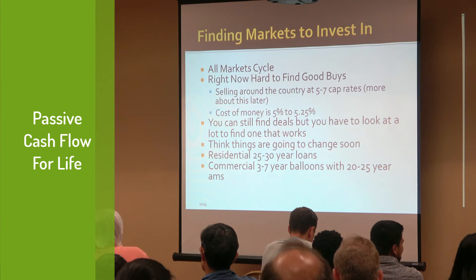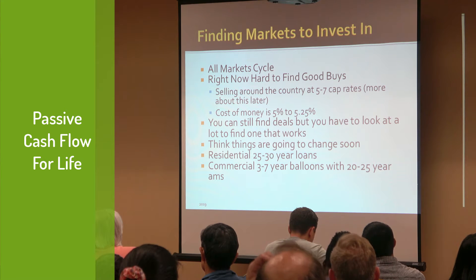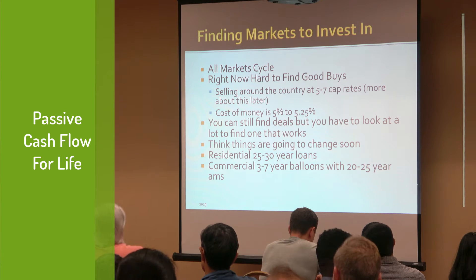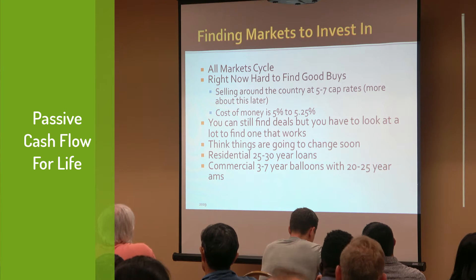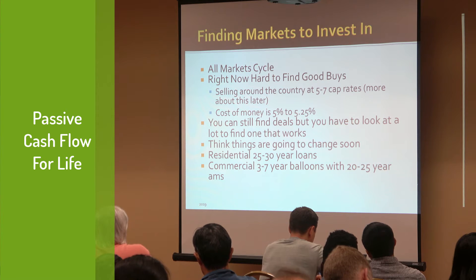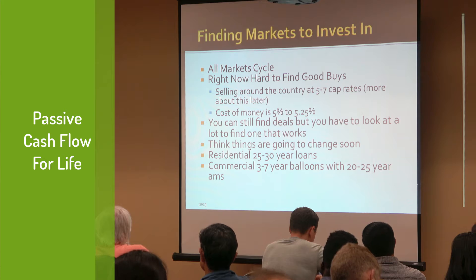Right now the cost of money is five to five and a half percent. If you're buying a property at a five to a six cap rate, your cost of money is as much or more than the property earns. So I'm always looking for a two to three percent spread. If the cost of money is five and a half, I don't want to buy anything at less than a seven and a half cap rate. I still have to put money down to get a loan, but I want some kind of spread.